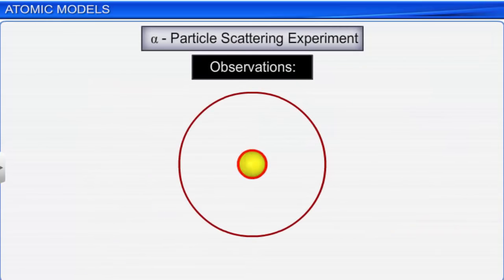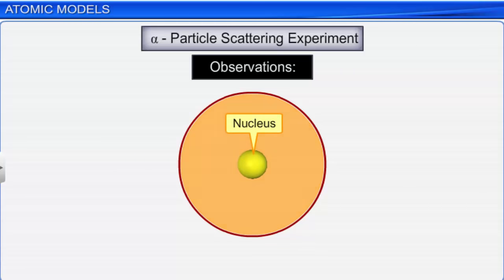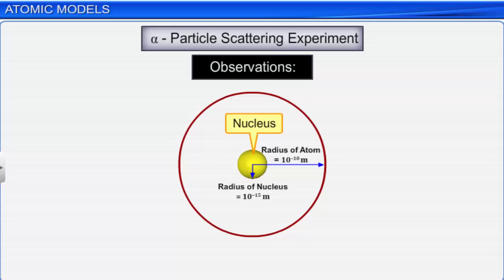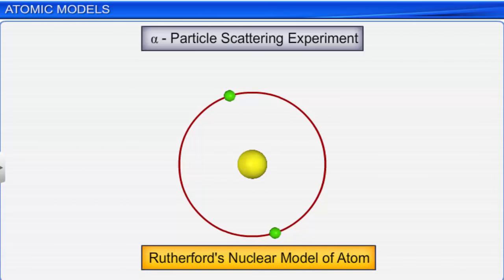Rutherford named the positively charged center in an atom the nucleus. Calculations showed that the volume of the nucleus is negligible compared to the total volume of the atom. For an atom of radius 10⁻¹⁰ meter, the radius of the nucleus is about 10⁻¹⁵ meter. That means, if a cricket ball represents a nucleus, the radius of the atom would be about 5 kilometers. Based on the observations and conclusions of the gold foil experiment, Rutherford proposed a new atomic model called Rutherford's nuclear model of atom, immediately after the discovery of protons.